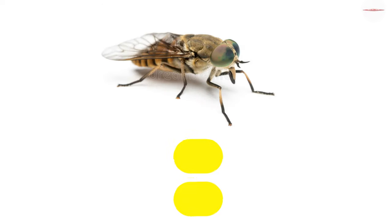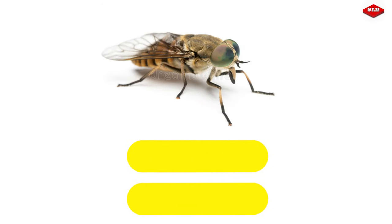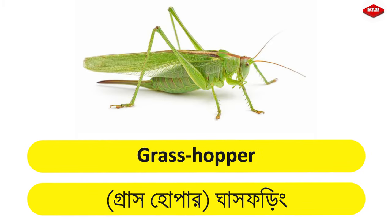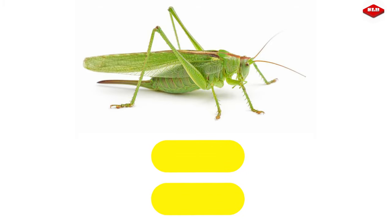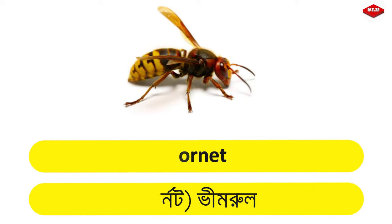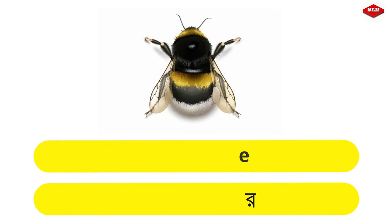Horsefly – Ghora Machi. Grasshopper – Ghashphorin. Hornet – Bheemrol. Humblebee – Bromore.